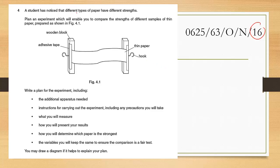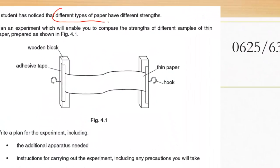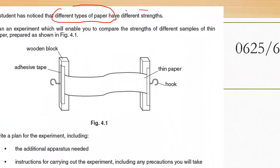So here is an example of how you need to plan for different types of paper with different strengths would have different effects and how you can plan an experiment to check that.